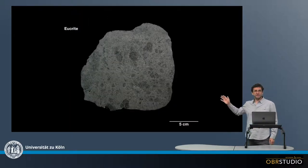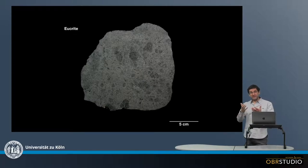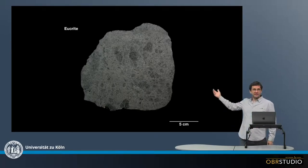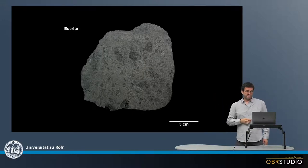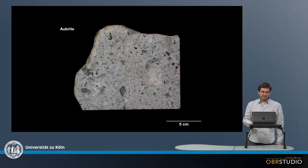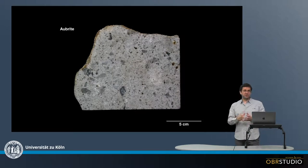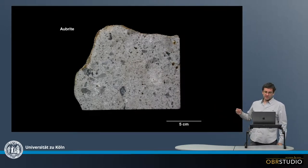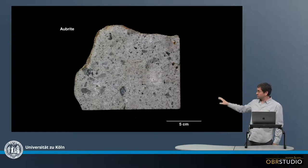This is a eucrite — so this is a mantle piece from an asteroid, likely coming from the asteroid Vesta. And if we would study this in more detail we see that this has more magmatic-like structure. This is another example for a mantle rock. Again if we would study this in more detail it would have more magmatic texture, although this has quite a clastic structure here.